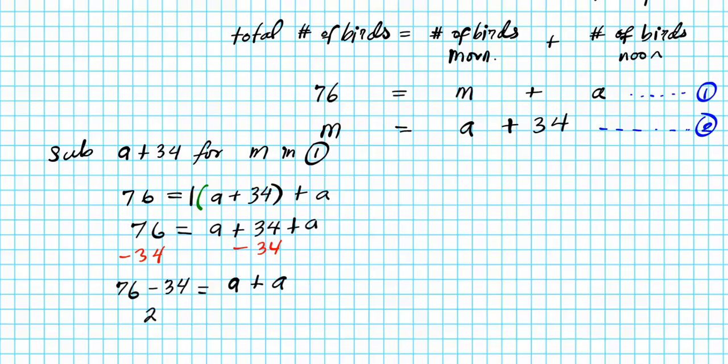76 minus 34 is 42. A plus A is 2A. Imagine there's a one here and a one here, you just add the coefficients. Divide both sides by 2, and you end up with your final answer. A is equal to 21.